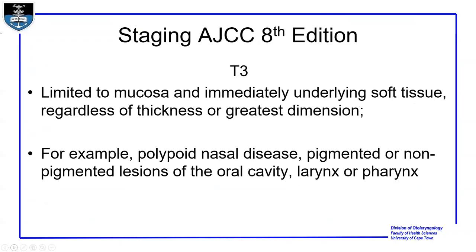There are two staging systems used for sinonasal mucosal melanoma. The first is the AJCC eighth edition. Most papers in the literature were using the seventh edition, as the eighth is quite new. A key difference is that once you diagnose mucosal melanoma, it automatically becomes a T3 — there is no T1 or T2. This reflects the aggressiveness of these tumors. T3 is limited to the mucosa and immediately underlying soft tissue, regardless of thickness or greatest dimension, unlike cutaneous melanomas. For example, this can be polypoid nasopharyngeal disease, or pigmented or non-pigmented lesions of the oral cavity, larynx, or pharynx.